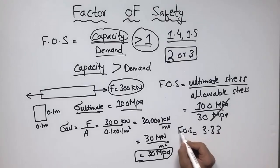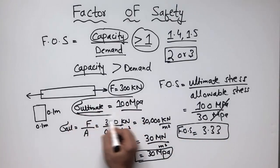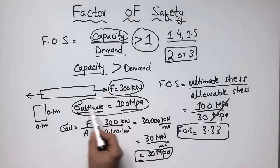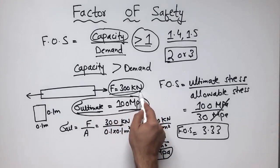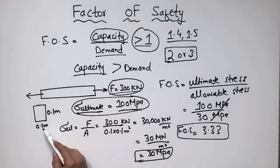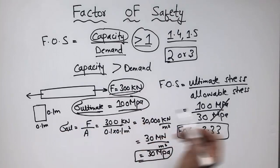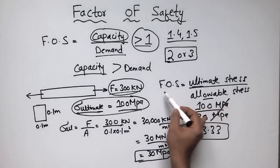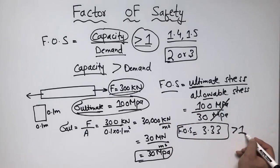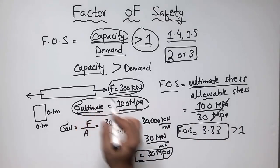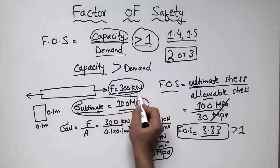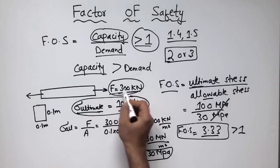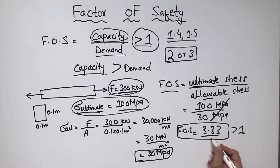Dividing 100 MPa by 30 MPa, the factor of safety comes out to be 3.33. The ultimate capacity was 100 MPa and the allowable stress from the 300 kN load on the 0.1 × 0.1 m section was 30 MPa. Since 3.33 is greater than one, the steel bar is safe. There will be no damage or failure as long as the load remains at or below 300 kilonewtons.